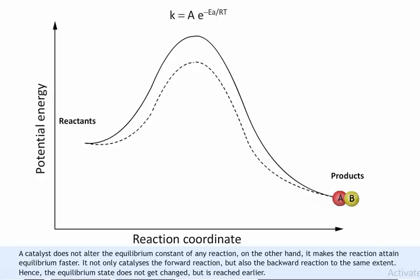Rather, a catalyst helps in attaining the equilibrium faster. It catalyzes the forward as well as the backward reactions to the same extent, so that the equilibrium state remains the same but is reached earlier.